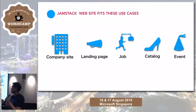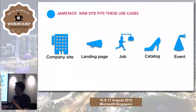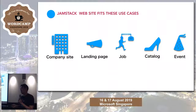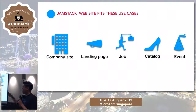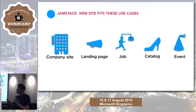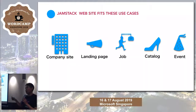Jamstack websites fit these cases: company sites, landing pages, and job sites are typical cases because these are almost stable. Seasonal catalog sites are usually updated once or twice a year. And for event sites, when we are done with our tasks, we do not update them anymore.